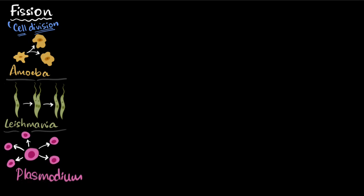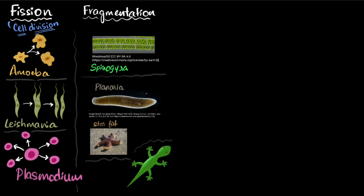So that's what happens for unicellular organisms. What happens for multicellular ones? Well, if you consider spirogyra, a simple multicellular being, then it uses what we call fragmentation to reproduce.